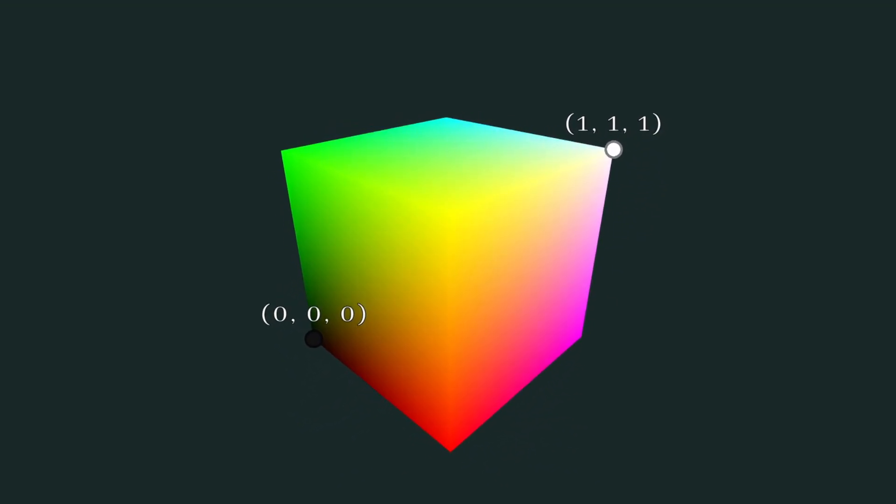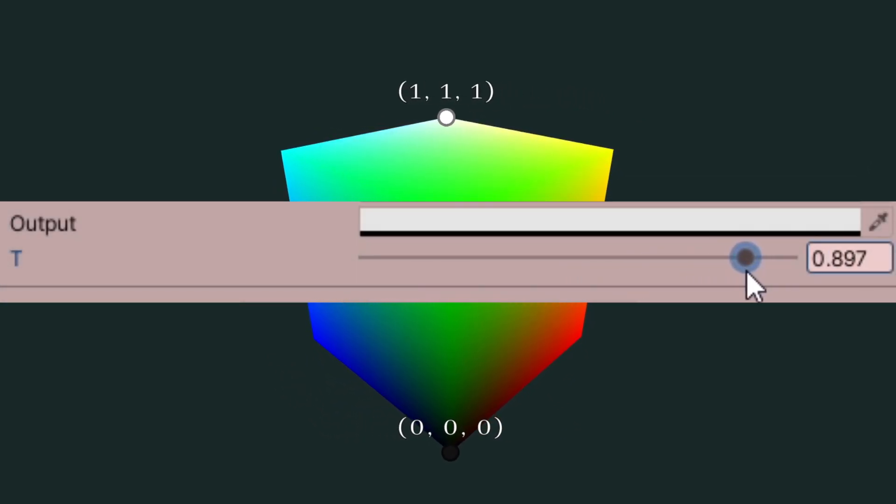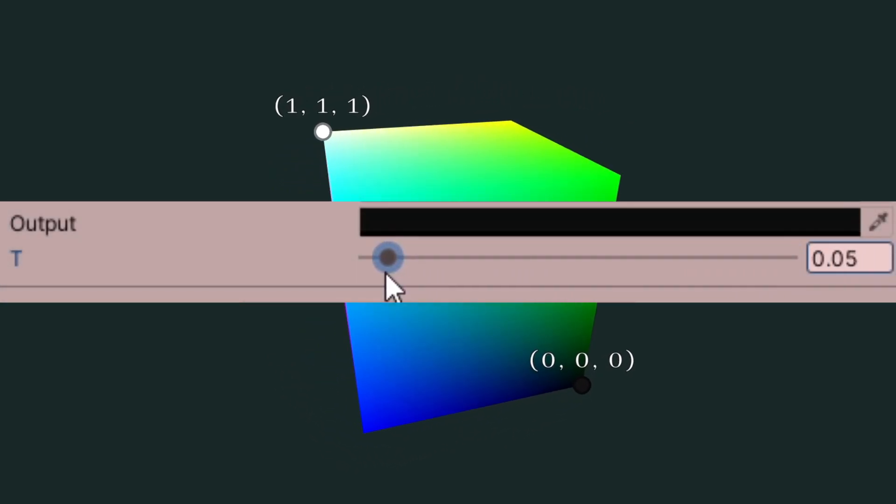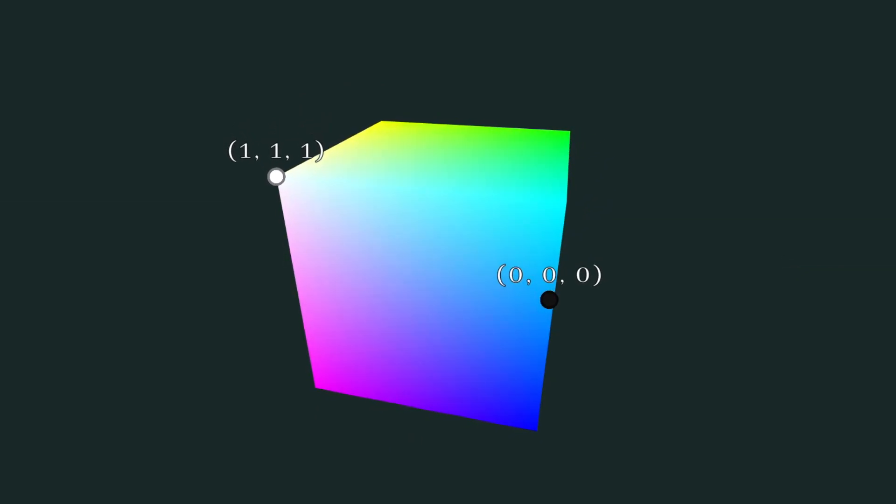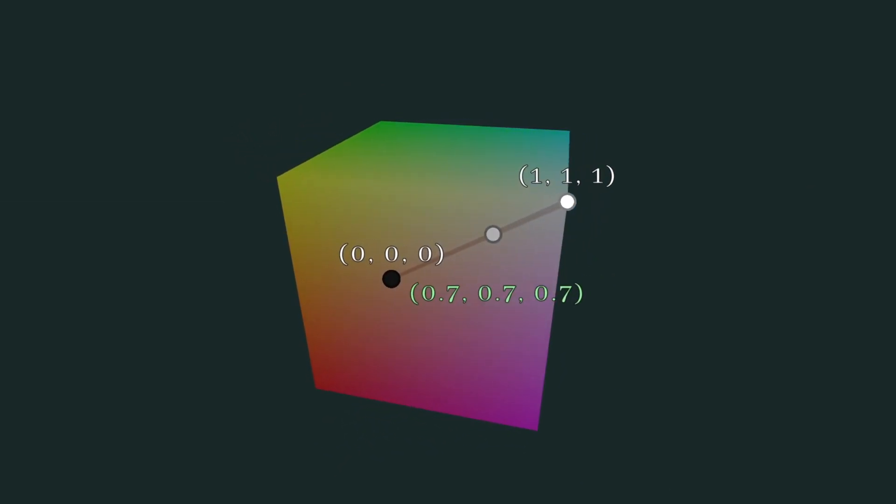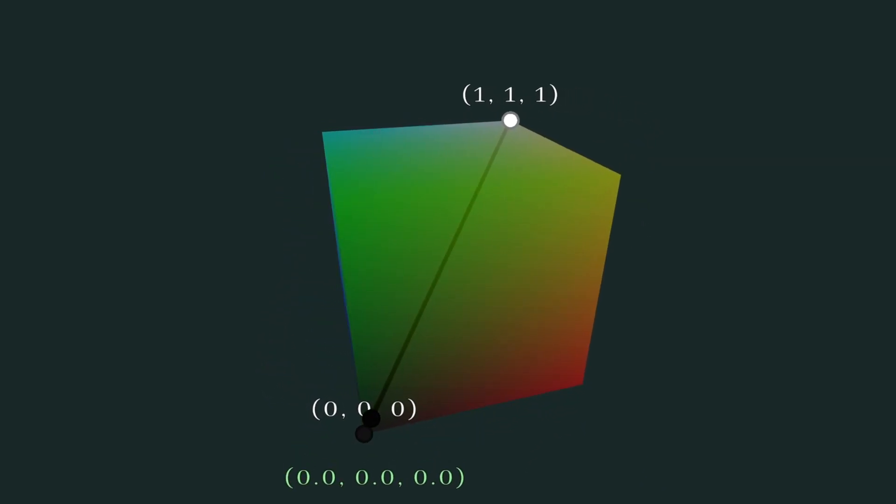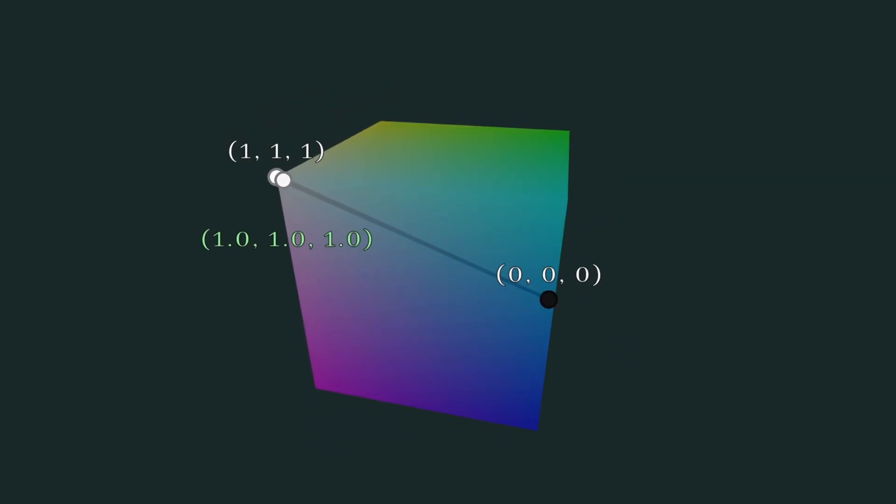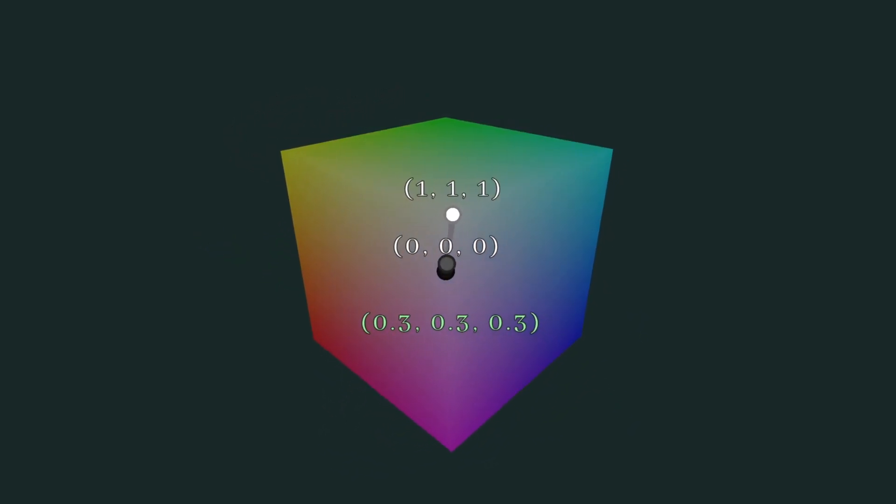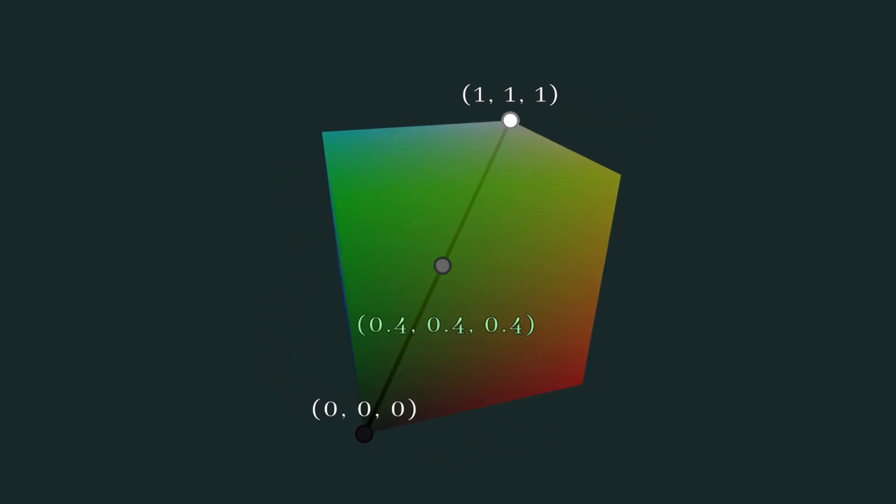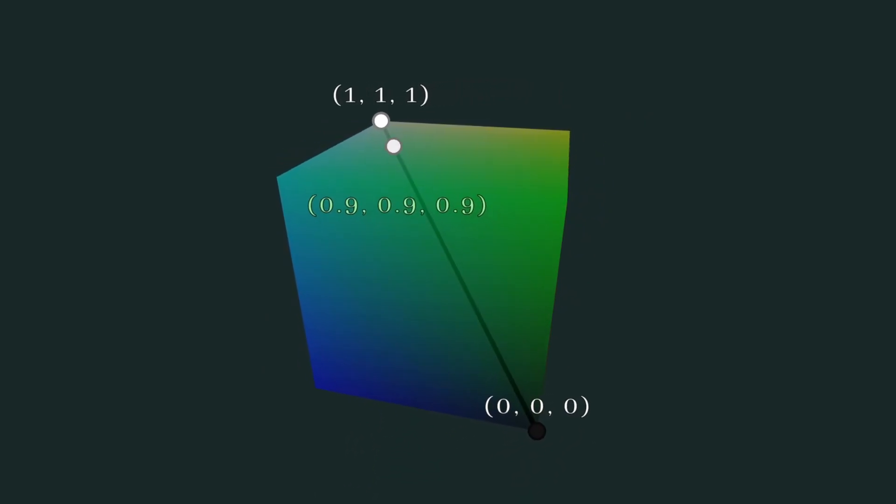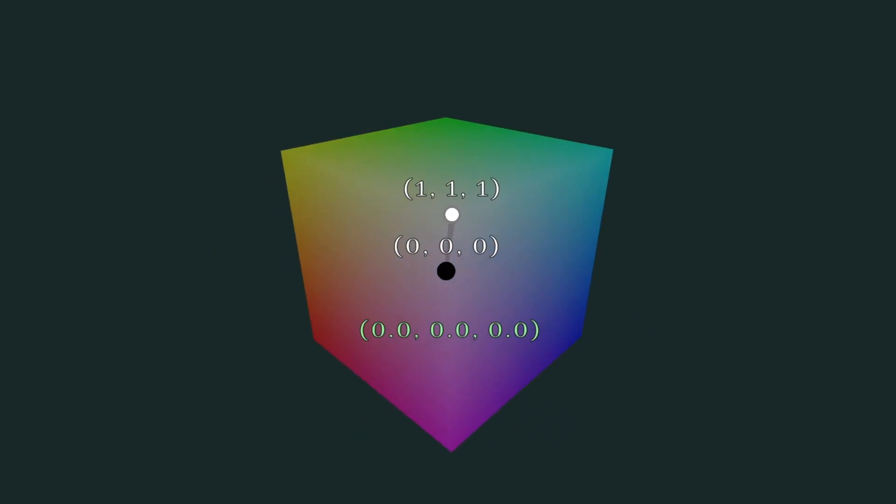So by lurping between black and white, like we did in our earlier example, what we're actually doing is finding a colour along the line that connects these two points together in this 3D representation. Here we can see that the line runs through all of the different shades of grey along the diagonal of the cube. So suddenly this makes a lot of sense. By interpreting colours in 3D space, we can see that lurping a colour is no different to lurping a vector. I like to think of a colour as a vector in disguise.